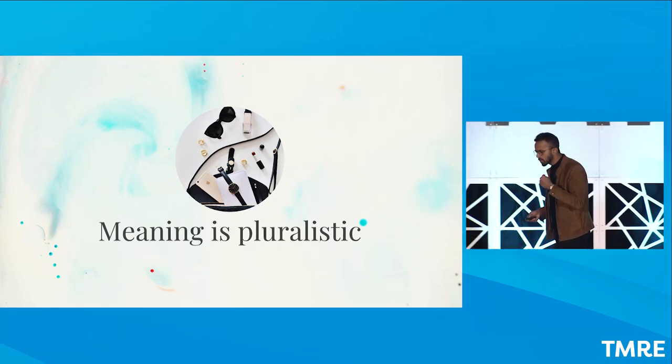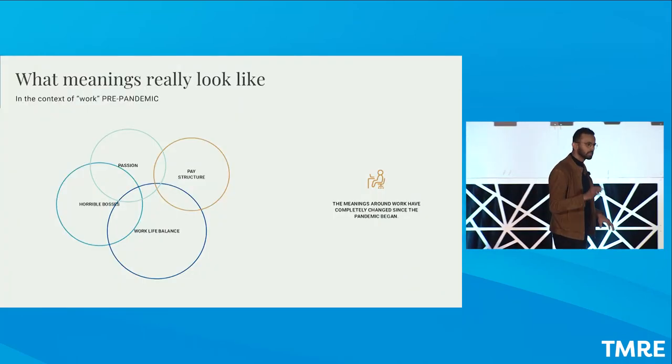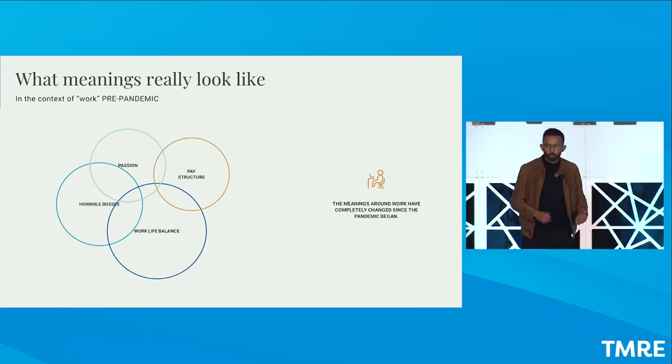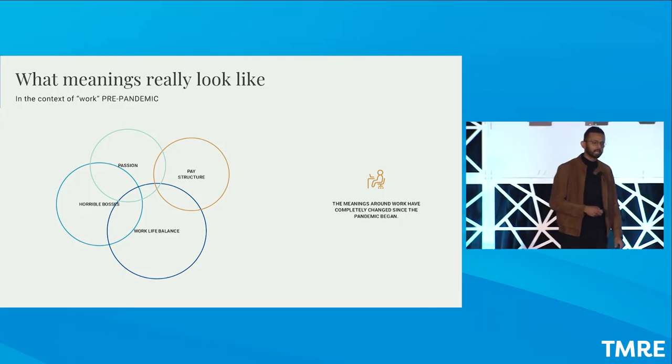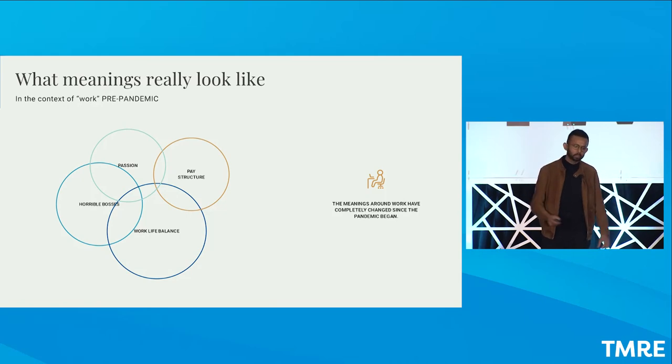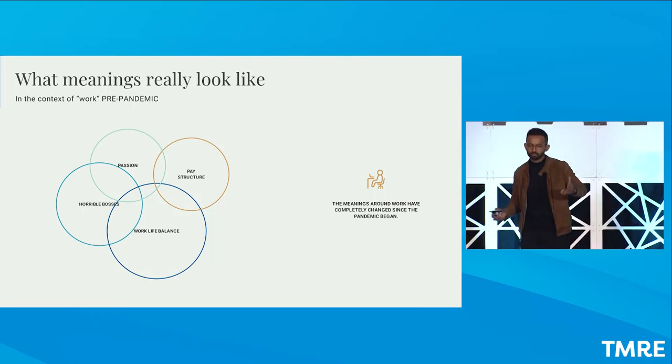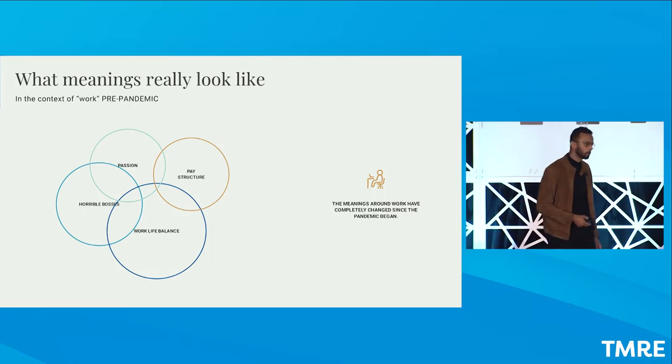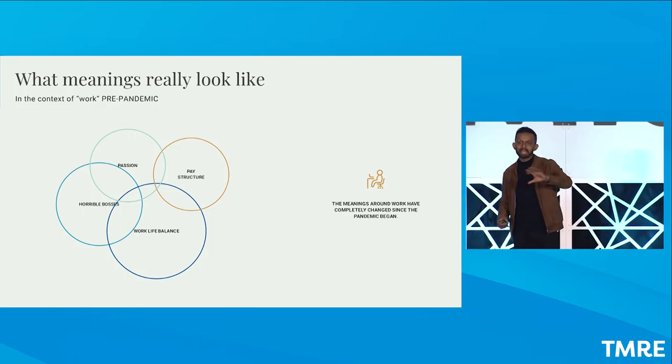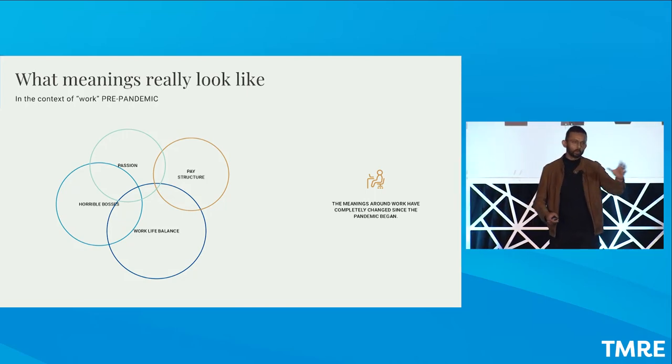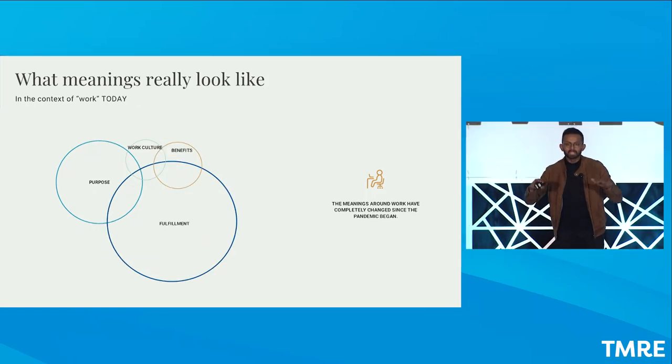So meaning is pluralistic. And I want to demonstrate this to you by sharing a little bit of research that we've done on the future of work. And I'm sharing a very simplified version of it, but nonetheless, an important one for the purpose of illustrating this point. So what you're seeing on your screen is the pre-pandemic analysis. So this is pre-2020 analysis of the meanings around work. And you'll see the biggest bubbles around work-life balance, horrible bosses. Horrible bosses really refers to toxic work environments. And you'll see there's conversation, dominant meanings around pay and passion, all as expected. Again, there's a reason why the movie horrible bosses was successful pre-pandemic. You can't make that in today's context. And here's why.